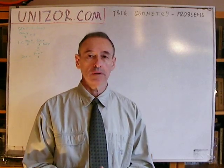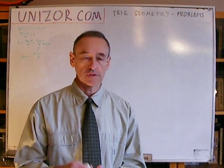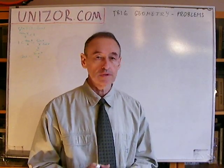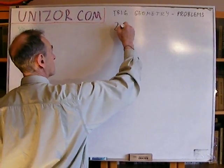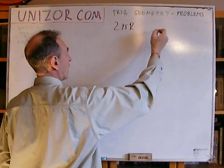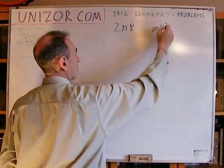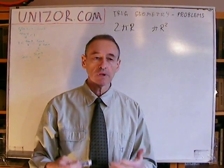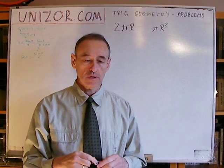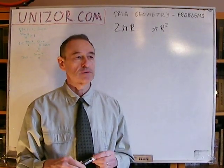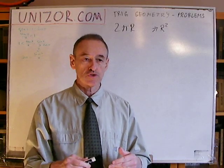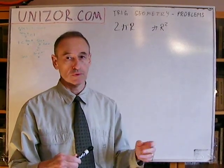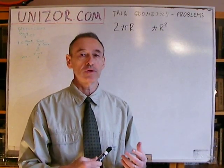I will be talking about the lengths of the circumference of the circle and the area. We know the formulas: the circumference is 2πr, where r is the radius, and the area is πr². I would like to approach these formulas from trigonometric aspects. I'm not really pretending to prove or solve something — it's more of an illustration.